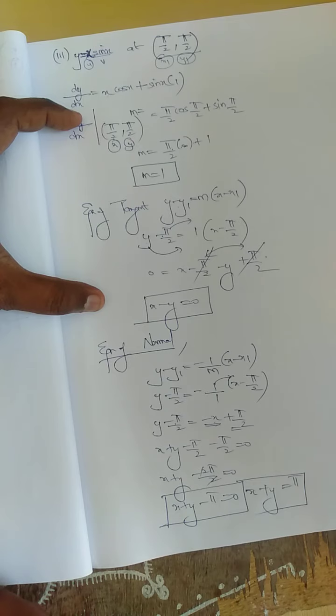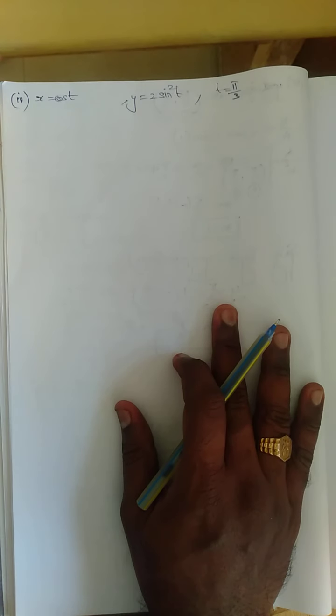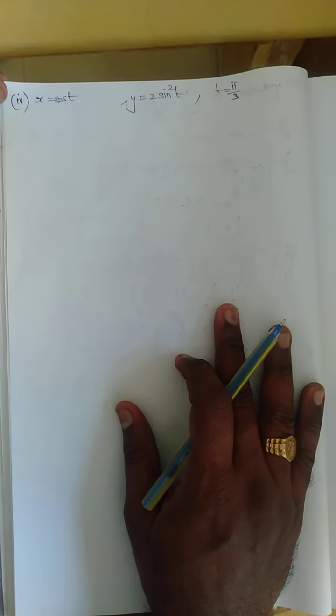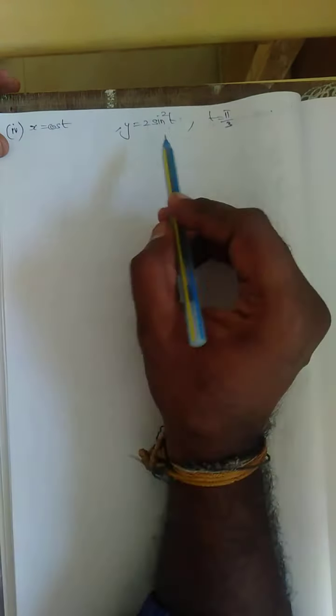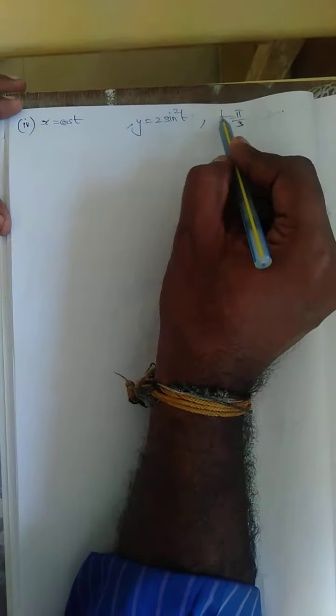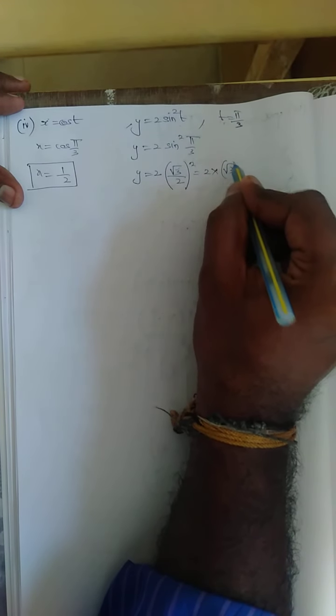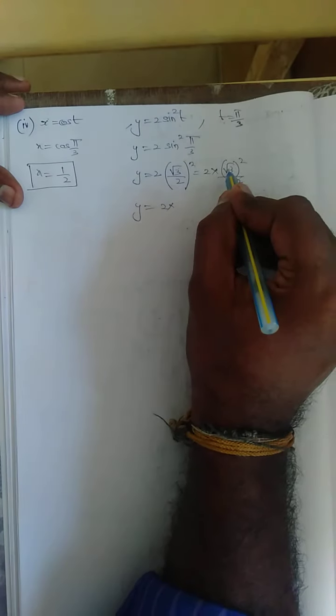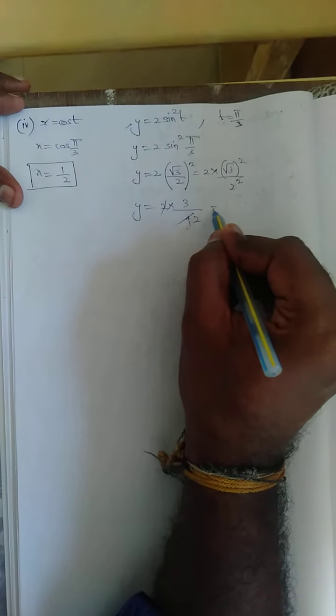Fourth substitution: x = cos t, y = 2sin²t, where t = π/3. They have not given the point directly, so first find the point by applying t = π/3. x = cos(π/3) = 1/2. y = 2·sin²(π/3) = 2·(√3/2)² = 2·(3/4) = 3/2. Therefore the point (x, y) is (1/2, 3/2).